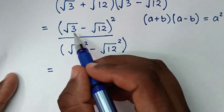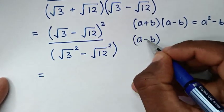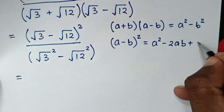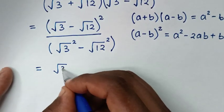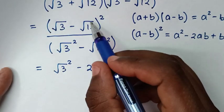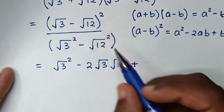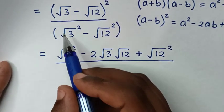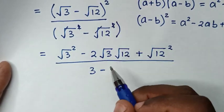In the next step, the numerator is square root of 3 minus square root of 12, all squared. This is in the form of A minus B squared, which expands to A squared minus 2AB plus B squared. So: A squared gives square root of 3 squared, minus 2AB gives 2 times square root of 3 times square root of 12, plus B squared gives square root of 12 squared. In the denominator, square root of 3 squared is 3, minus square root of 12 squared is 12.